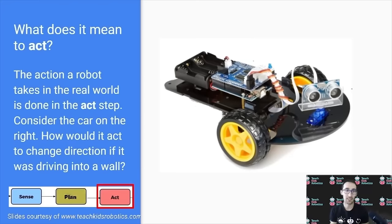Finally, what does it mean to act? So, the action a robot takes in the real world is done in the act step. Consider the car on the right. How would it act to change direction if it was driving into a wall?